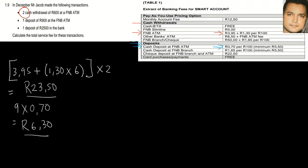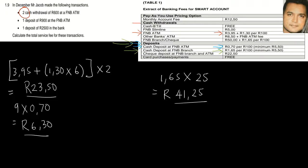The third part involves one deposit of R2,500 in the bank — meaning at the branch. Under deposits, 'free cash deposit at FNB branch' states R1.65 per R100. For R2,500 that's 25 times R1.65, giving R41.25. Adding all three parts together: R23.50 plus R6.30 plus R41.25 gives a total of R71.05.